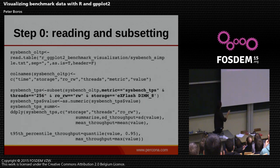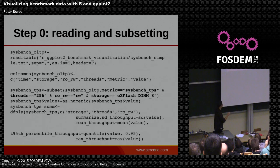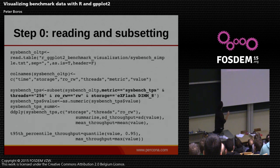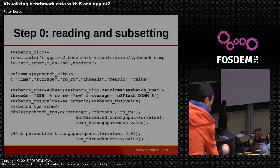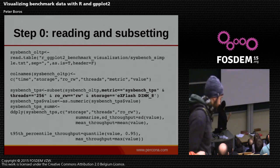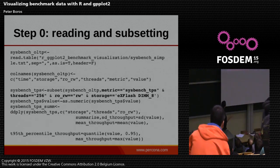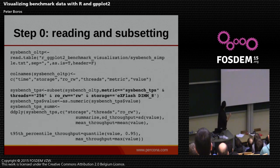So how to read the file from R? We create the data frame with read.table, which reads a table from a file — this is the output of the given script, one line per second per metric. We name the columns, and for each graph we do a subset. For example, in the Sysbench TPS data frame, we are subsetting the Sysbench OLTP data frame where the metric is TPS, threads is 256, the read-write case, and this storage device.